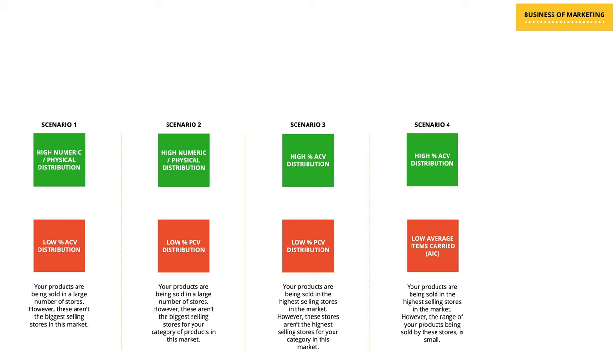Scenario four is a situation where you've got high percentage ACV distribution but along with it you've got low average items carried. This means that while your product is being sold in the highest selling stores in the market, not all of your products in the range are being sold. Therefore, if you want to improve your distribution further, you need to try and find a way to get these stores to stock more of your products.